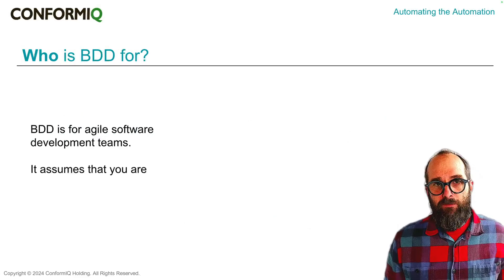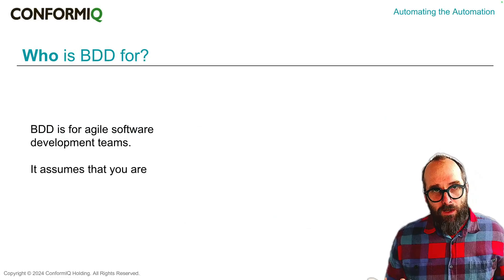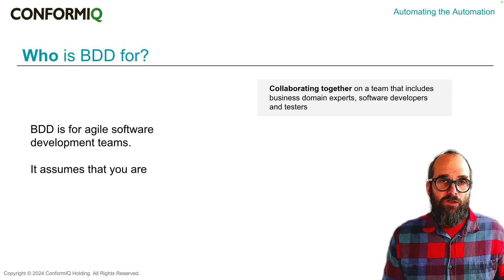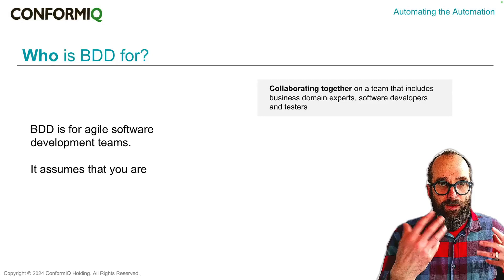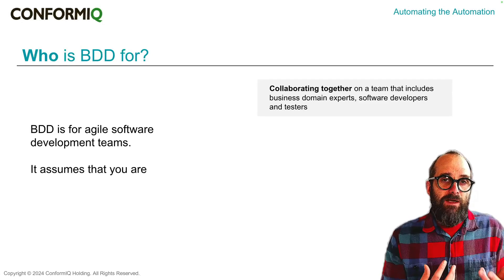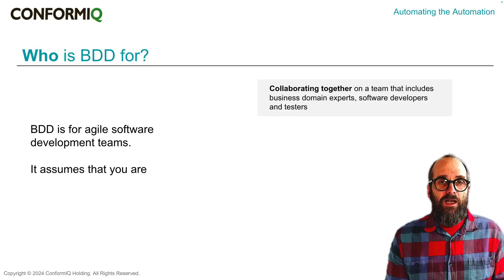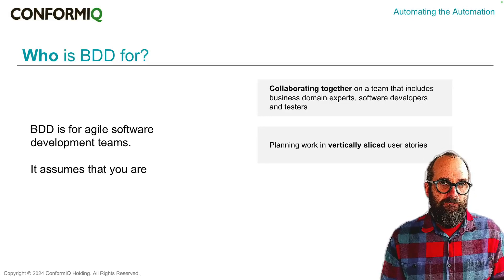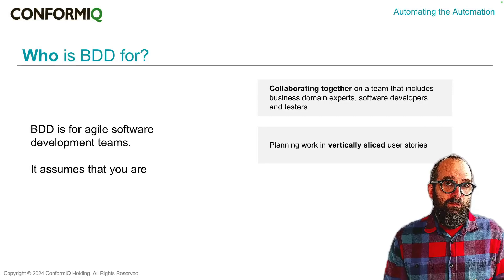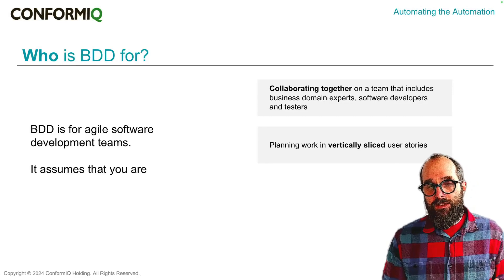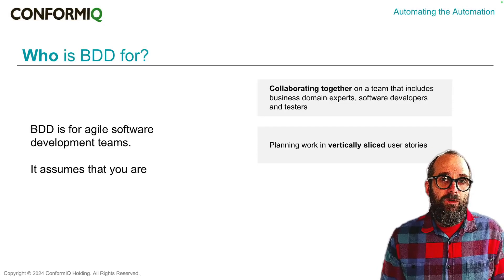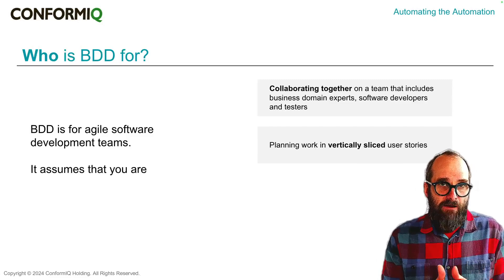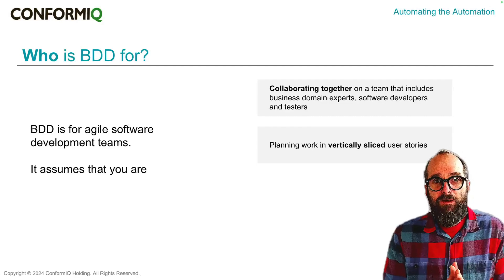BDD is for agile software development teams. That word 'agile' has come to mean lots of different things to different people over the years, so let's be specific. We imagine that you're a cross-functional team — people who understand the business problems, people who understand software development, and people who are thinking about how to break that software, who can see edge cases and corner cases. We also assume that you're planning your work in vertically sliced user stories, planning a change that includes something to the user interface, layers bridging to the back end, and changes to the back end itself — everything needed in one package to make some kind of user-facing behavior change.